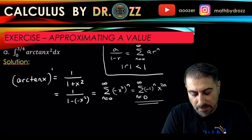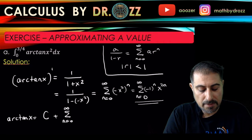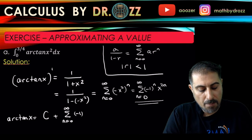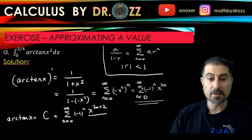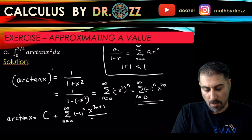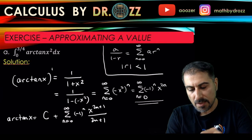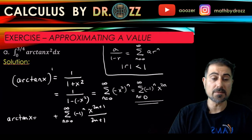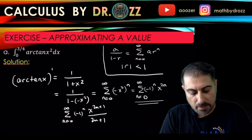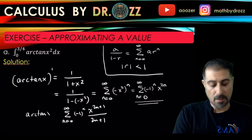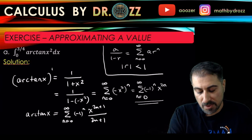So looking at the anti-derivative, I'll include the constant C and do term-by-term integration. That gives us (−1)ⁿ x^(2n+1) / (2n+1) plus C. To find C, plug in x = 0: the left side is 0 and the right side is C plus 0, so C = 0. Now I can rewrite this cleanly as the power series representation of arc tan x.